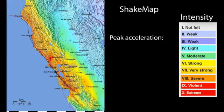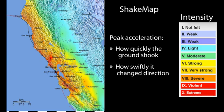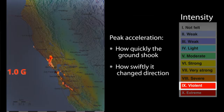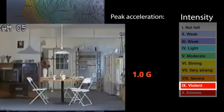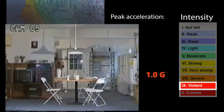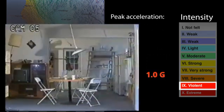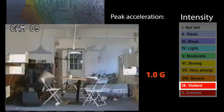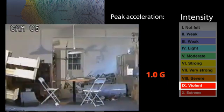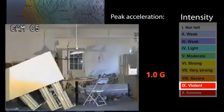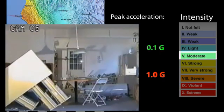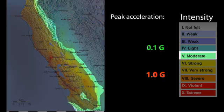Colors on modern shake maps represent peak ground acceleration — that is, how quickly the ground shook and how swiftly it changed direction. The red zones reached 1g acceleration, or 100% of gravity, a violence of shaking illustrated in a shake table experiment. In the green zone, moderate shaking occurred with accelerations of up to 10% of gravity.